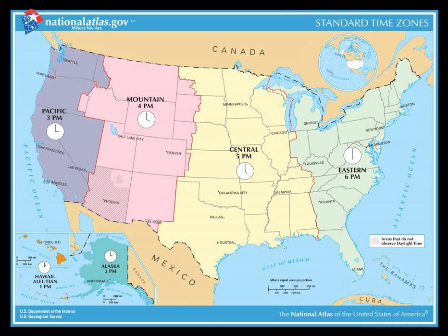Daylight time became a local matter. It was re-established nationally early in World War II, and was continuously observed until the end of the war. After the war its use varied among states and localities. The Uniform Time Act of 1966 provided standardization in the dates of beginning and end of daylight time in the U.S., but allowed for local exemptions from its observance.